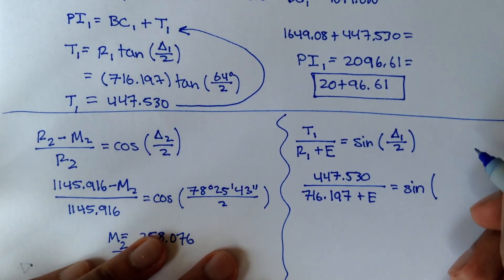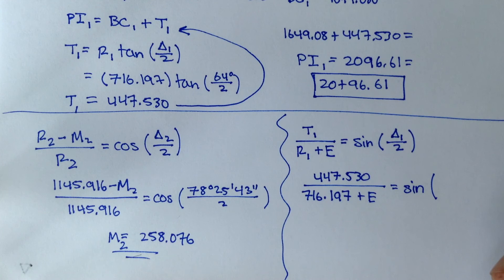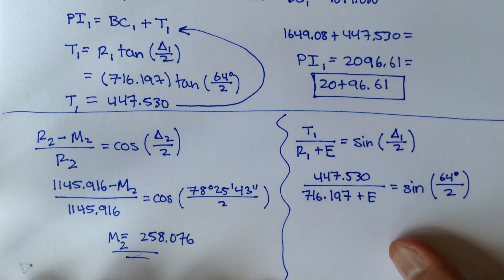plus E is equal to sine delta 1. Delta 1 was, what was delta 1? Where did delta 1 go? Delta 1, where are you? Delta 1 was 64 over 2, right? And we solved that in the previous video.